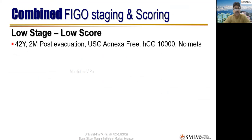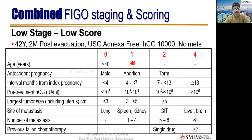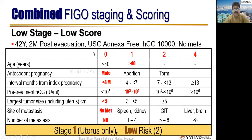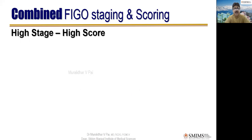Example of low stage and low risk: 42-year-old, two months post-evacuation, ultrasound shows disease confined to uterus, hCG 10,000, no metastasis. Scoring: age 42 = 1 mark; antecedent molar pregnancy = 0; interval two months = 0; hCG 10,000 = 1 mark; tumor size less than 3 cm = 0; no metastasis = 0; no prior chemotherapy = 0. Total = 2 marks. Only uterus involved → Stage I, low risk.